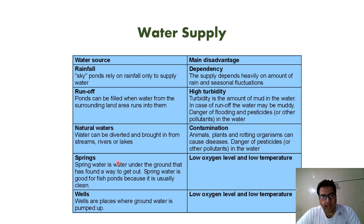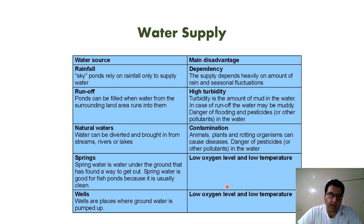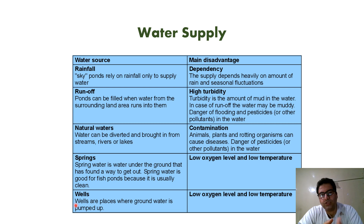Springs — whether underground or surface springs — can be a water source, but the problem is low oxygen level and low temperature. Wells, tube wells, and bore wells can also meet water demand, but again, low oxygen level and low temperature are the main disadvantages. Before construction, keep in mind that the water supply should be nearby. We should not waste money by digging channels or streams to bring water from a distant source, as this consumes a lot of money and can cause economic loss for the aquaculturist.